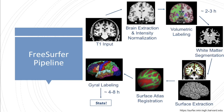As many of you may know, the problem with traditional neuroimaging pipelines like FreeSurfer is that they take a lot of time to process a single MRI volume. This is in part due to the fact they include many different pre-processing steps like brain extraction, intensity normalization, as well as all the different steps that are necessary to get good surfaces, and some of these steps are actually quite time intensive.